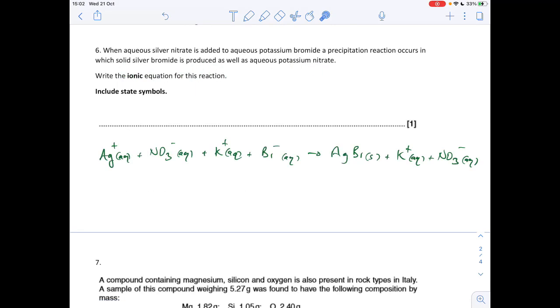Question 6 now. We've got to write the ionic equation for the reaction between aqueous silver nitrate and aqueous potassium bromide to form solid silver bromide as well as aqueous potassium nitrate. So you'll notice I've written some formulae underneath. So what I've done is when you've got something like aqueous silver nitrate, that's actually two separate ions. It's the aqueous silver ion and the aqueous nitrate ion. Likewise for potassium bromide, K+, Br-.